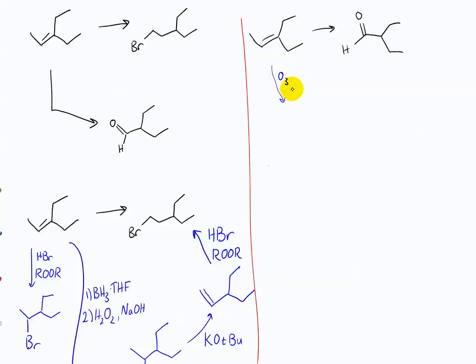Okay, so if we do ozonolysis with a reductive workup, does that get you the product? No. No, why not? So you haven't put the double bond in the correct position. Right, you haven't put the double bond in the correct position. This would lead to this type of cleavage product. And that's not the correct product. So that must not be right.